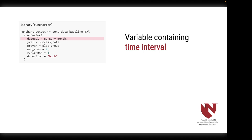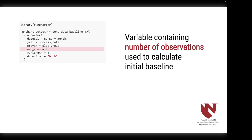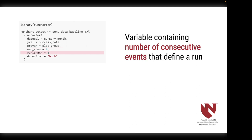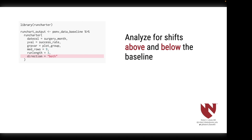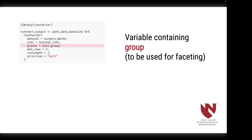Let's step through how we'd use the run charter package. The primary function call is runcharter. The first variable contains our time interval of interest — for us, the surgery month. The second variable is our outcome of interest, our MIPS 430 success rate. The next variable contains the number of observations used to calculate the initial baseline; we had nine months of historic data, so we set this to nine. The next variable contains the number of consecutive events that define a run; our experts felt three consecutive months of changed performance would be clinically meaningful, so we set this to three. We're interested in shifts both above and below a baseline, so we set our direction to both. The last variable is a grouping variable used for faceting; we only had one group, so we set this to a dummy variable called plot group.